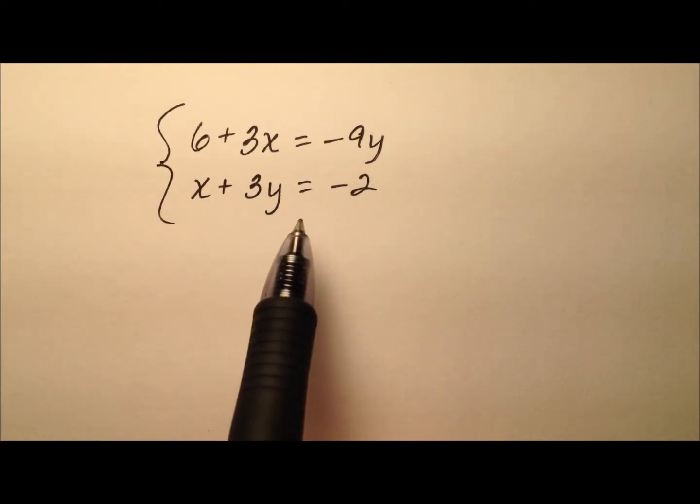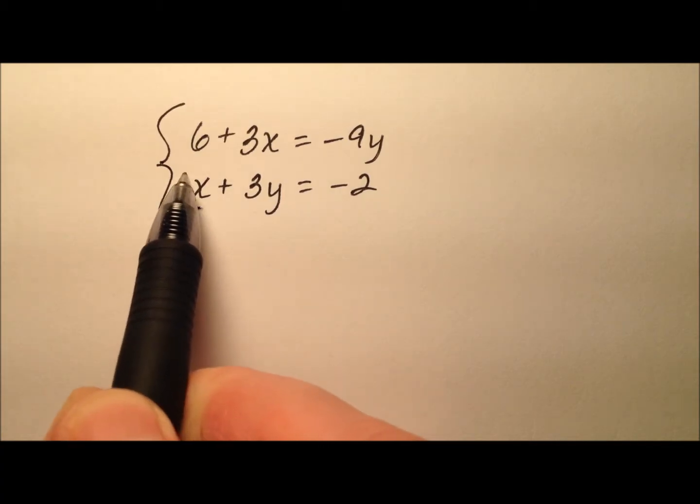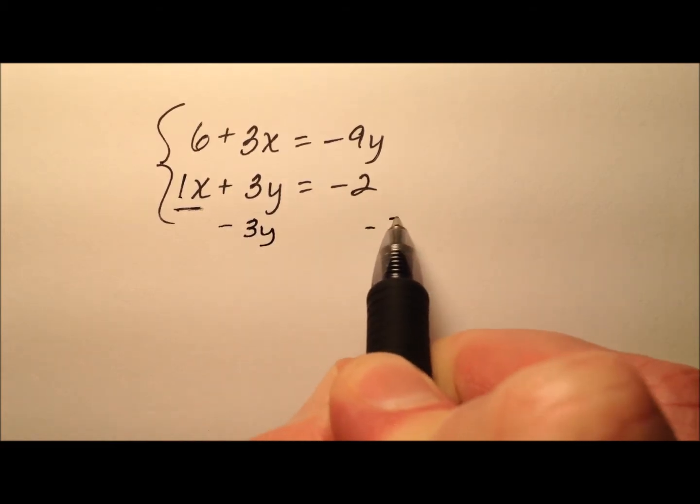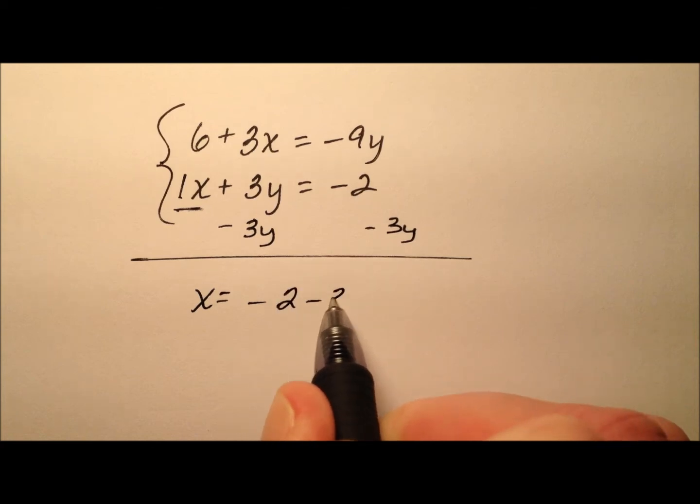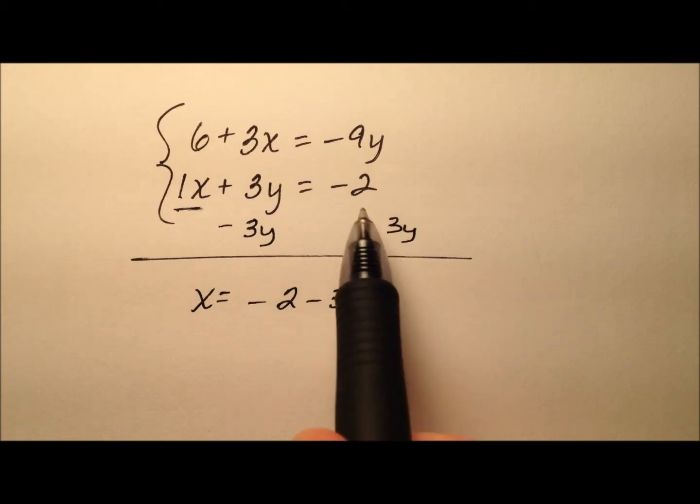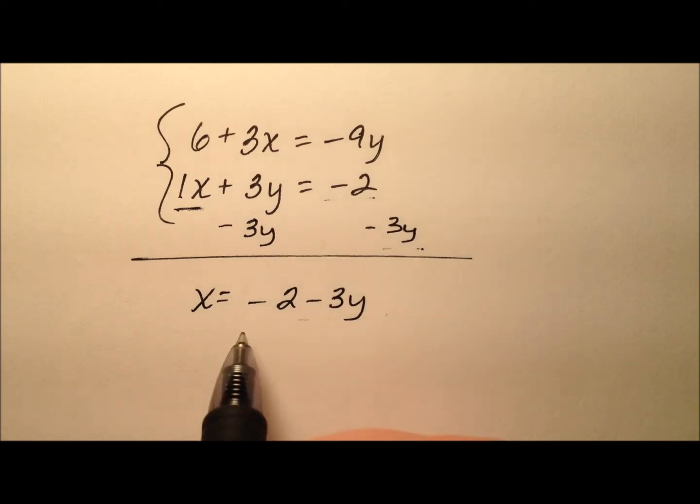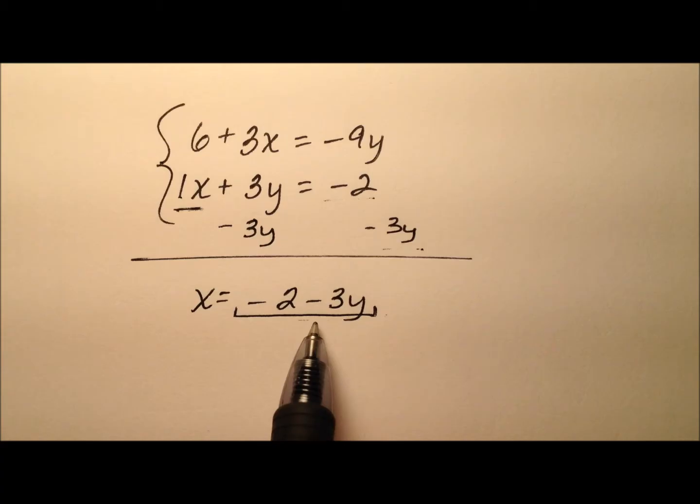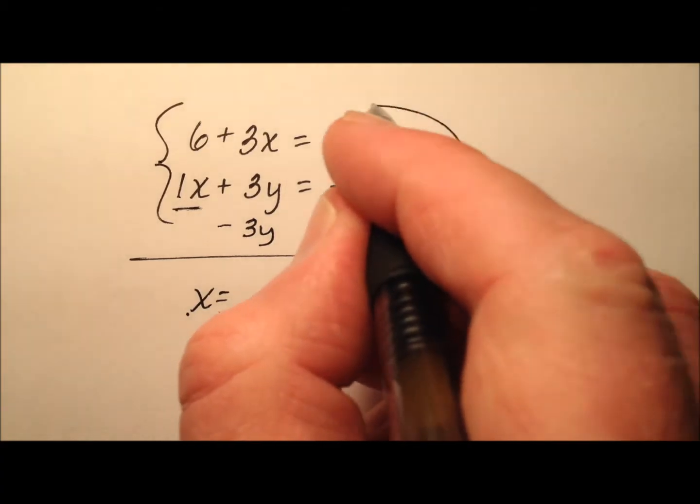So we're going to use substitution here and we're going to look for one of these variables that's easy to isolate, and it looks like this x right here has a coefficient of 1. So I could subtract 3y from both sides of this equation and get the x all by itself. So I have negative 2 minus 3y. Remember this negative 2 and minus 3y are not like terms. This negative 2 is a constant and this one has a variable so we cannot combine them. But x equals this expression right here, negative 2 minus 3y.